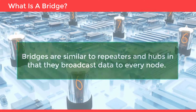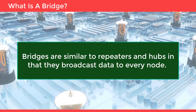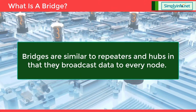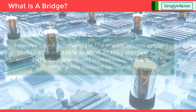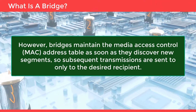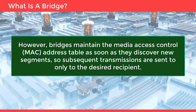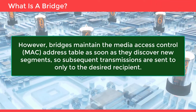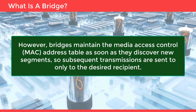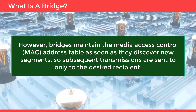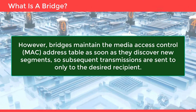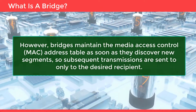Bridges are similar to repeaters and hubs in that they broadcast data to every node. However, bridges maintain the media access control address, which is the MAC address table, as soon as they discover new segments. So subsequent transmissions are sent only to the desired recipients.